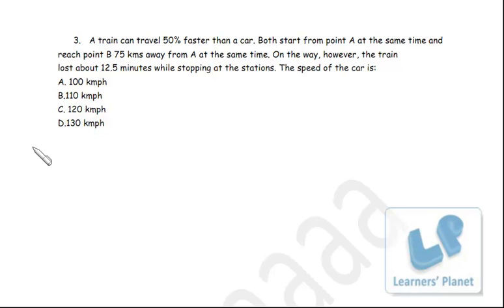It is taking one-third less time than this car, and that means this one-third is nothing but 12.5. If one-third is 12.5, that means 1 will be 12.5 times 3, which is 37.5 minutes. So 37.5 minutes is the unit time taken by the car.